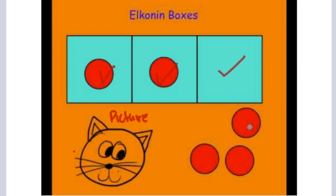So Elkonin boxes is used to test phonemic awareness. And it specifically has students isolate and identify how many phonemes are in a word. Using Elkonin boxes, there is no print, no letters, no words involved.